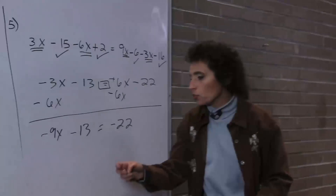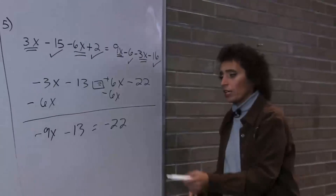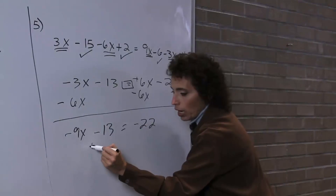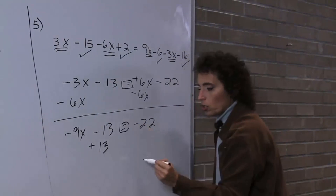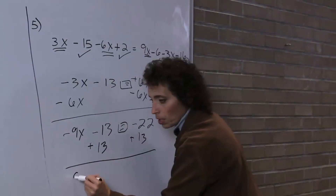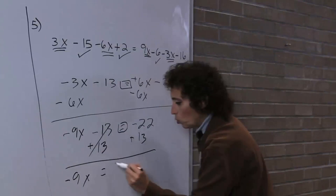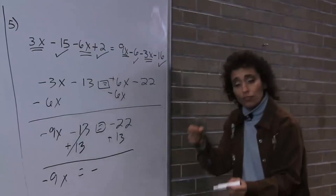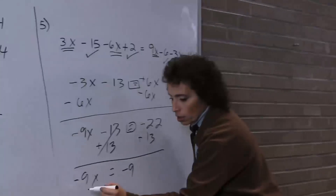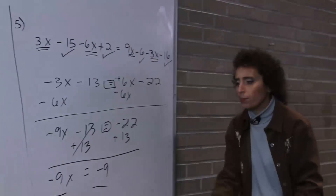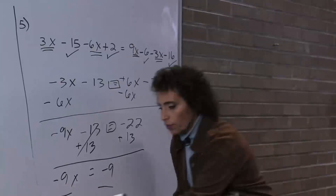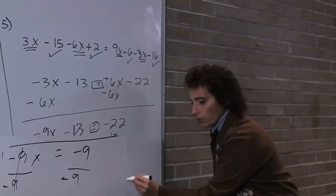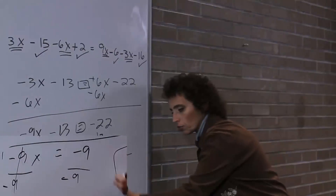I'm going to bring all the variables to the left. This is a plus, so I do the opposite — subtracting 6x and going across the equal sign. I owe you 3x, I owe you 6x, so I owe you 9x. Minus 13 equals negative 22. Now I add 13 to both sides: negative 9x equals negative 22 plus 13 — I owe 22 but I have 13, so I owe 9. Divide by negative 9 on both sides — a negative divided by a negative is positive, and 9 divided by 9 is 1. So x equals 1.